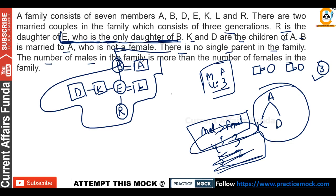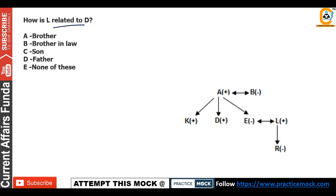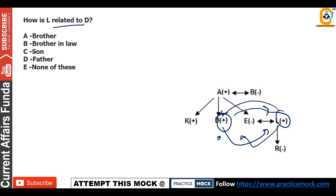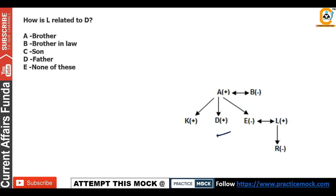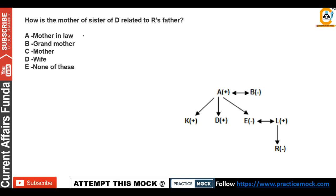Okay, so it was easy. The first question: how is L related to D? Since L is the husband of E, and E is the sister of D — both K and D are brothers — L is their brother-in-law. If D is female, then L would be sister-in-law. Next: how is the mother of the sister of D related to R's father? Sister of D is E; E's mother is B. So B is related to R's father L as mother-in-law.